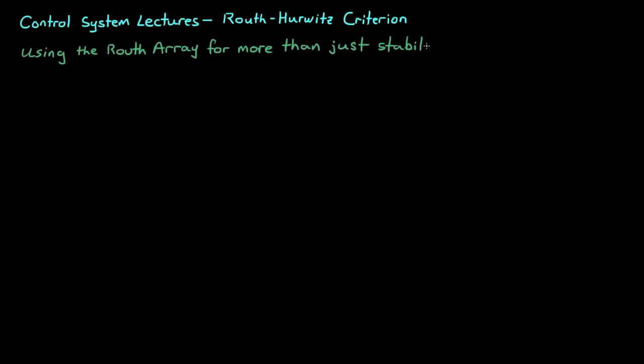Welcome back to Control System Lectures. This is the third and final video covering the basics of the Routh-Hurwitz criterion. The first two videos described the method for filling out the Routh array, even under special circumstances, and how to use the array to assess system stability. In this lecture I want to explain some useful ways to use the Routh array that go beyond just assessing system stability.